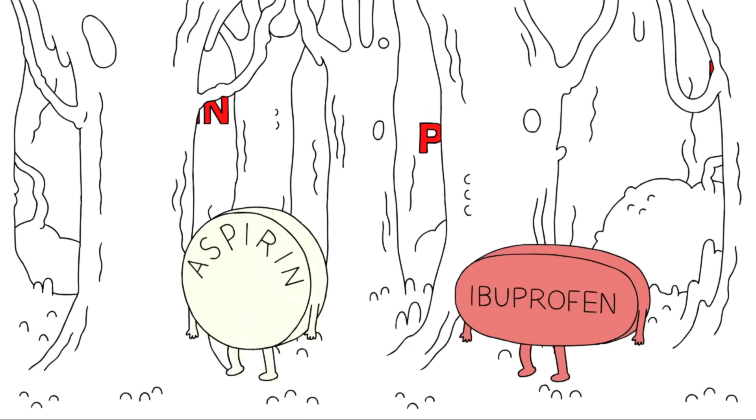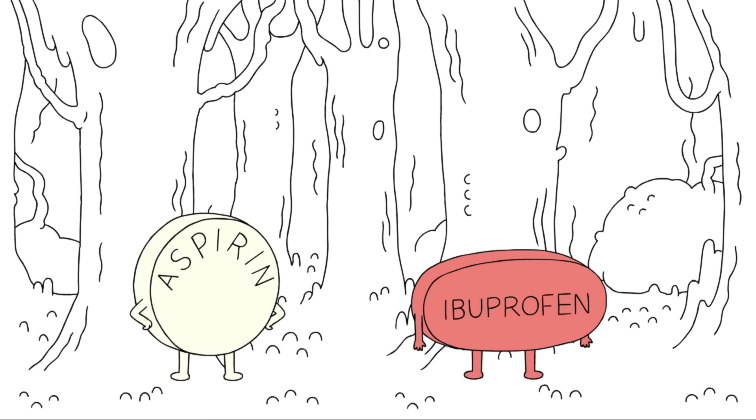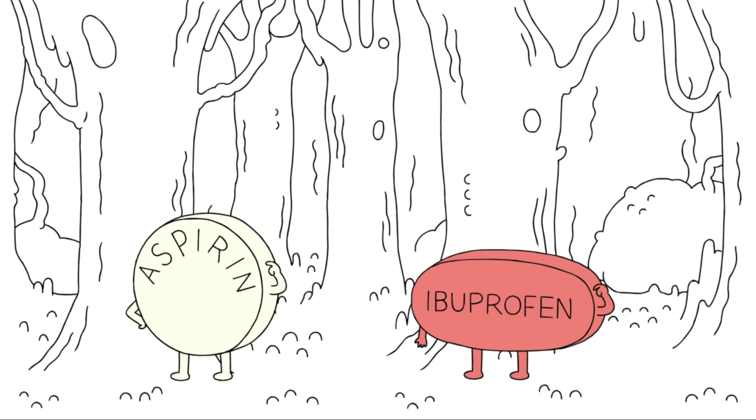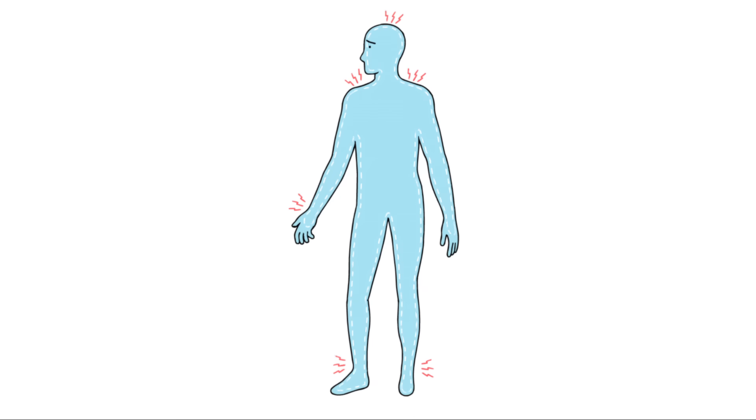But how do aspirin and ibuprofen know where the pain is? Well, they don't. Once the drugs are in your bloodstream, they are carried throughout your body, and they go to painful areas just the same as normal ones.